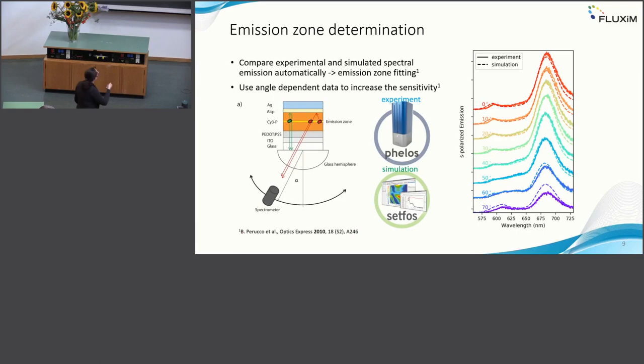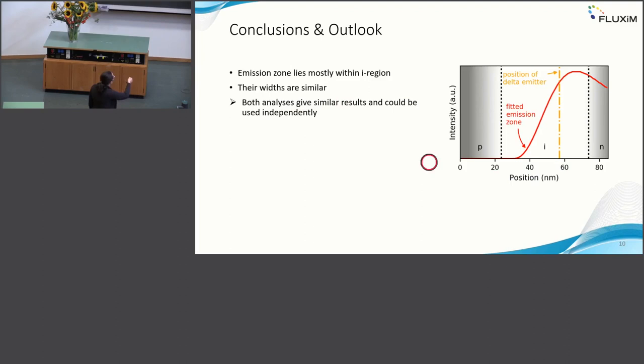We measured angular spectral information and then compared this to optical-electronic, only optical simulations actually, with SETFOS. The fitting algorithm is described in this paper. These are actually the results. We have here as a full line the emission from 0 to 70 degrees, and as dashed lines we have the simulation. You can see that it fits quite nicely. How does the emission zone look like? You see it here as a red line. This is the fit we get out of this emission zone fitting. As a comparison, you also have the delta emission position and also overlapped is this p-i-n structure that we determined from comparing EQE with simulated absorption measurements.